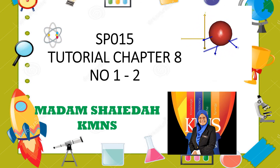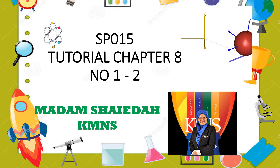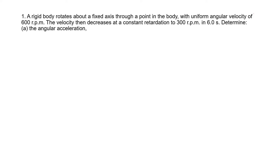Today we will do tutorial chapter eight, questions one and two. Question one: a rigid body rotates about a fixed axis through a point in the body with a uniform angular velocity of 600 rpm. The velocity decreases at constant retardation of 300 rpm in 60 seconds. So this is your omega naught, and this is your omega final. They give you a time of 6 seconds. Determine the angular acceleration.